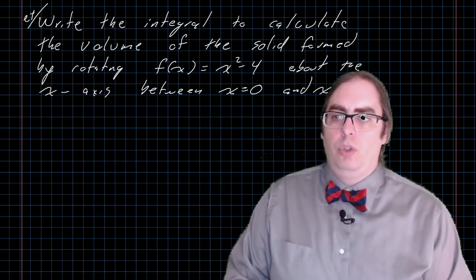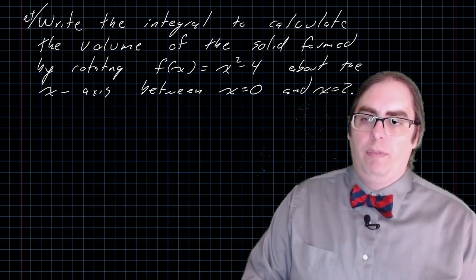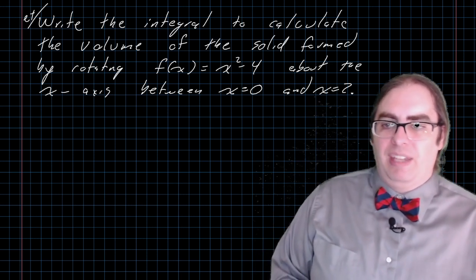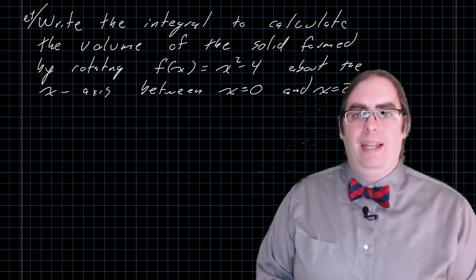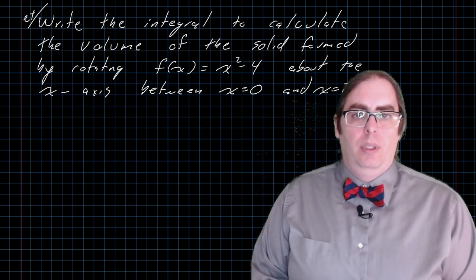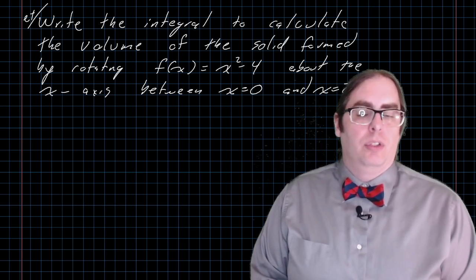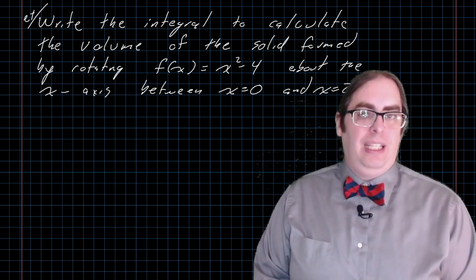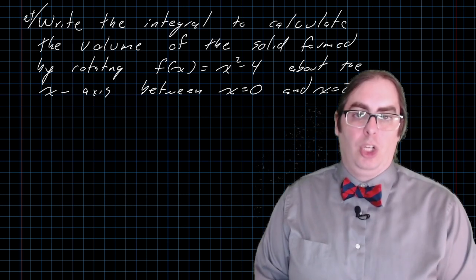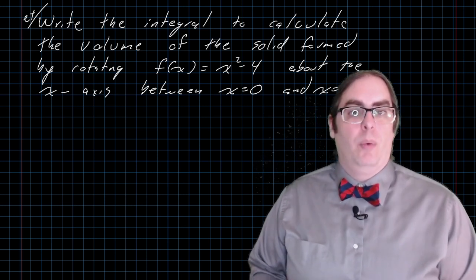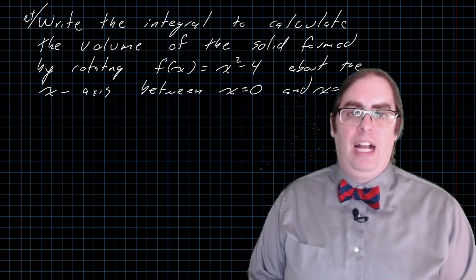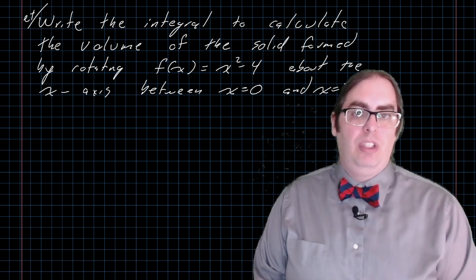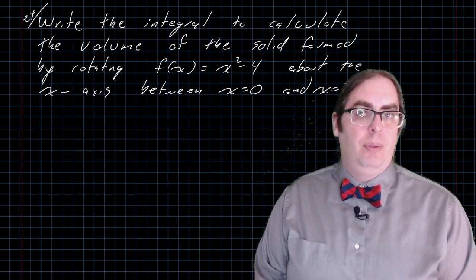I would like you to write the integral to calculate the volume of the solid formed by rotating f of x equals x squared minus 4 about the x-axis between x equals 0 and x equals 2. I do say just write the integral because setting it up is the important thing you should be able to evaluate this integral fairly easily if you would like to do so I encourage that but I'm not requiring it that's not what I want to check I want to see how the integral was set up that's the new thing that's the challenging thing here. Take a couple of minutes see what you can do with that and I'll see you in the next video.